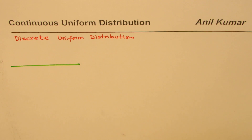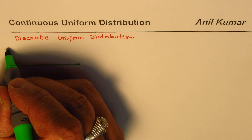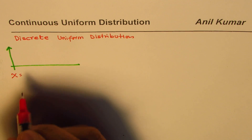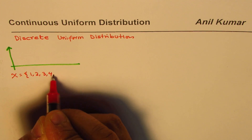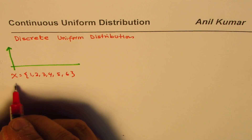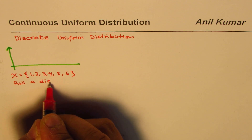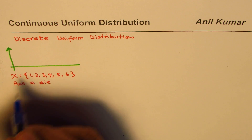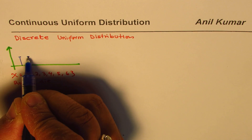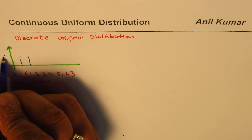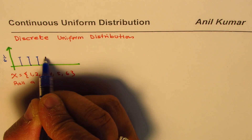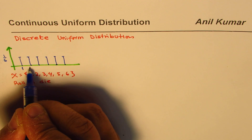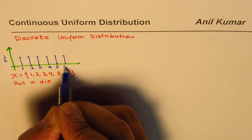Similarly, let's say we roll a die. If we define our random variable X as the number between 1 to 6, those are the possible outcomes when you roll a die. The probability of getting any one number is 1 out of 6. So for 1, probability is 1/6; for 2, it's 1/6 again — the same probability applies to 3, 4, 5, and 6 for a fair die.